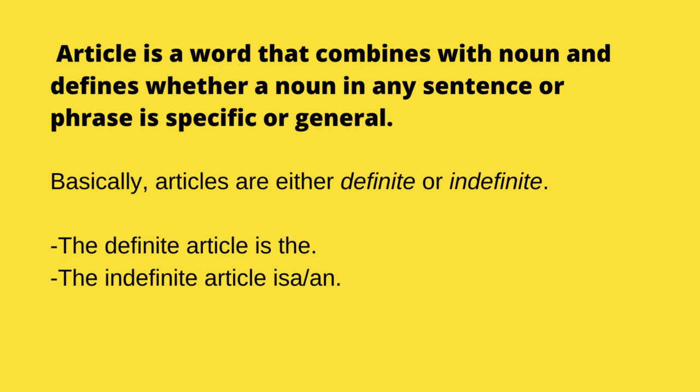Basically, there are two types of articles: definite article and indefinite article. 'The' is called a definite article. 'A' and 'An' are called indefinite articles.